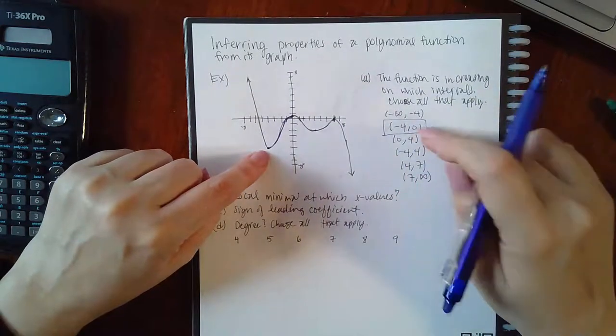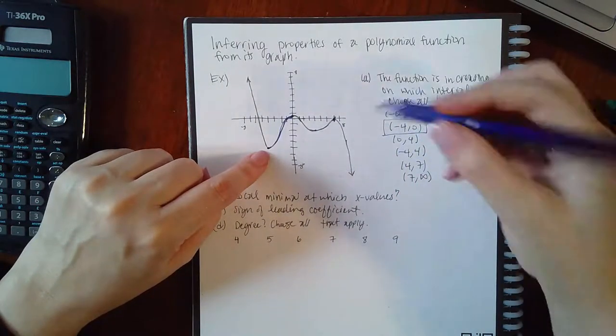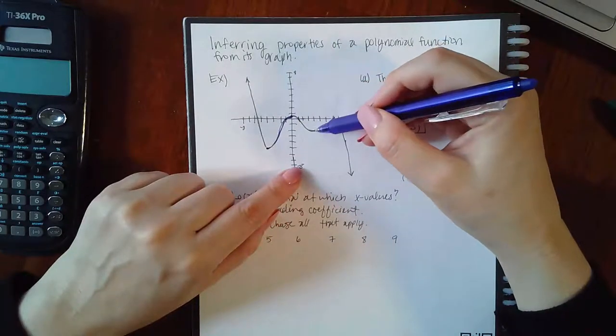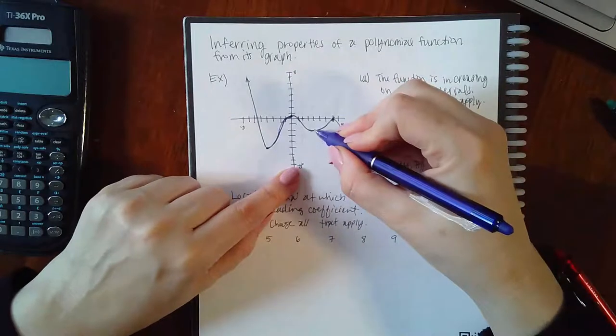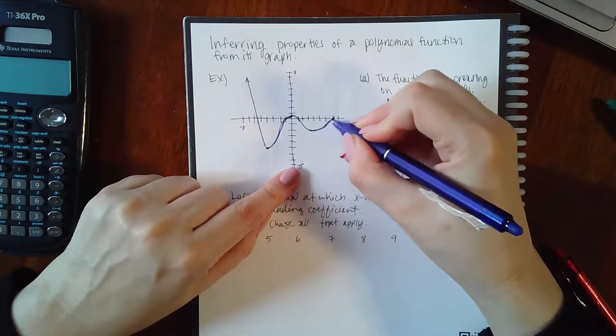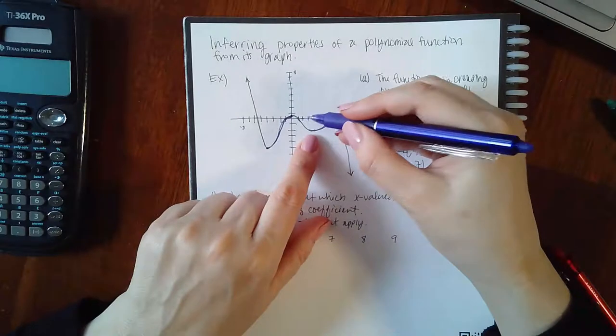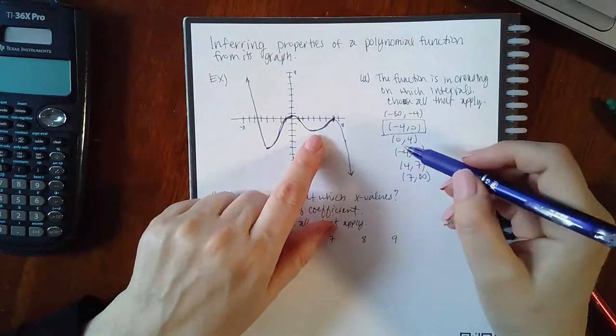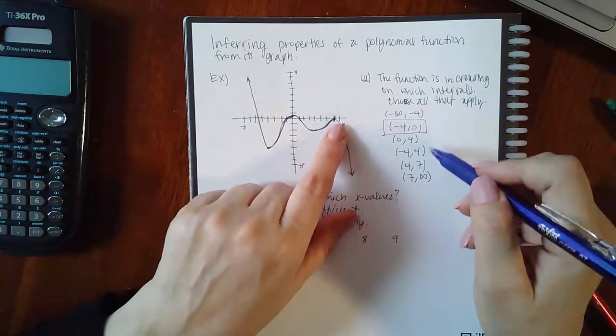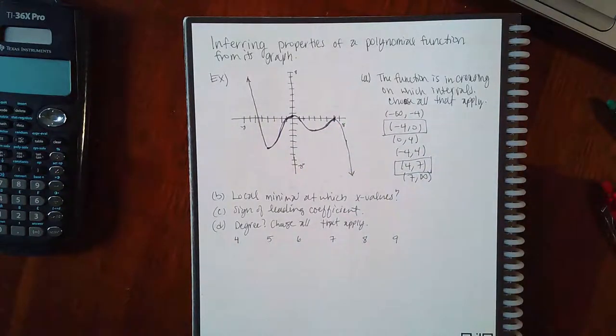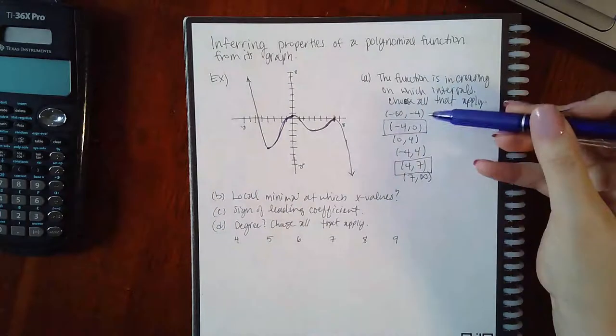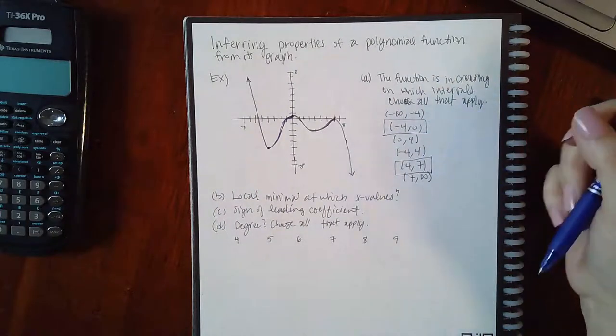Now from zero to this x value I'm actually going downward, but then from this x value to this little peak I am increasing again. From positive four to positive seven it looks like I am increasing again. Those are the only intervals where I'm increasing. If it had asked me for intervals of decreasing, it would most likely be these other intervals that we don't have here.